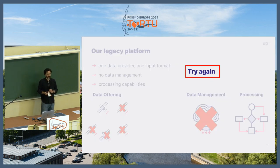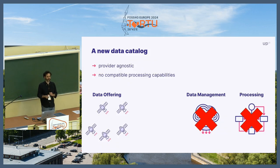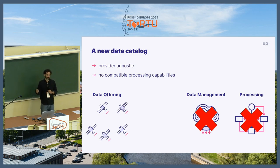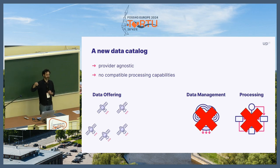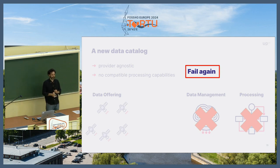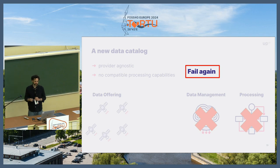We tried again by first introducing a new data catalog, and this new data catalog was in fact provider agnostic. The problem was that since we didn't have data management in place yet, our processing engine at the time just didn't work with all these different providers. So we needed to do something, and we failed again. Because we failed again, it was time to fail better — and that's where we are now.